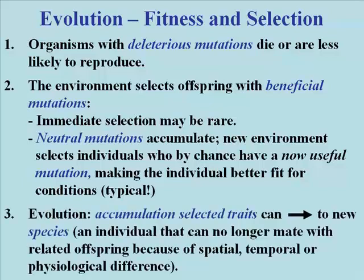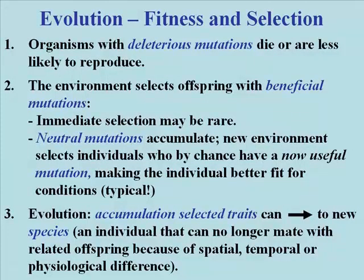Evolution leads inevitably to speciation, that is to say the formation of new species. At some point, the accumulation of naturally selected traits leads to physical or physiological differences in descendant populations, that perhaps along with physical separation make it impossible for them to mate with other lineages from the same set of forebearers. In other words, speciation occurs when populations of individuals become reproductively incompatible.